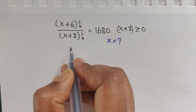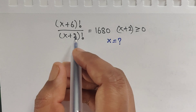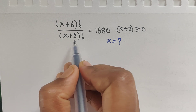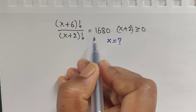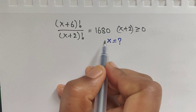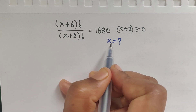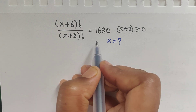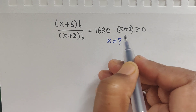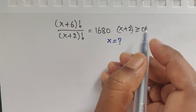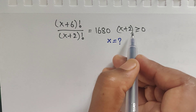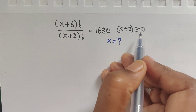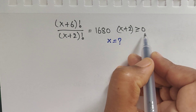Hello everyone, welcome back to our channel. Here we have one question: (x+6)! divided by (x+2)! equals 1680. In this problem we have to find the value of x. We are given the condition that x plus 2 is greater than or equal to 0.